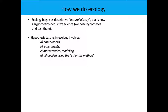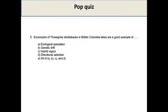One last quiz question. We talked a lot about evolution and speciation on Friday — ecological speciation, genetic drift, hybrid vigor, directional selection, or some combination of those. The answer is ecological speciation.